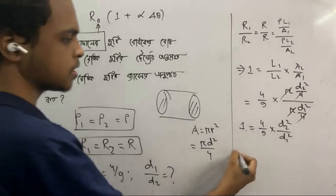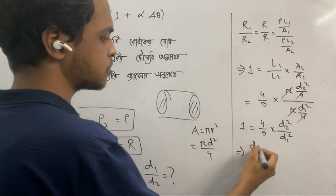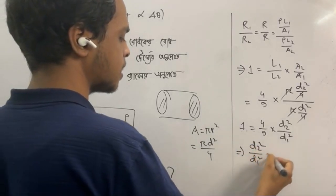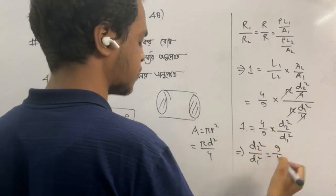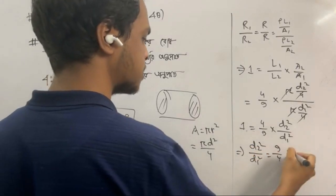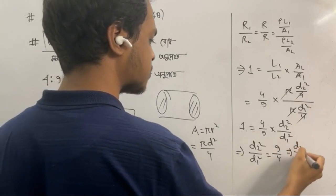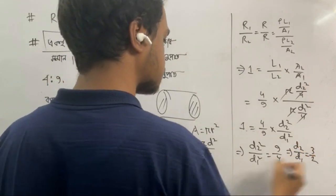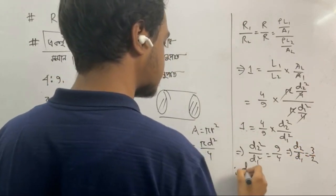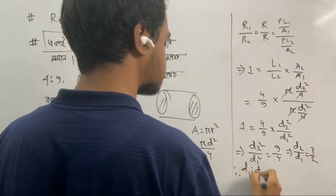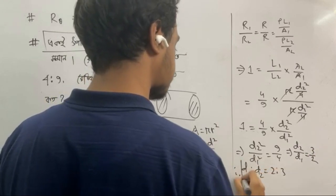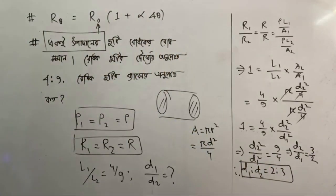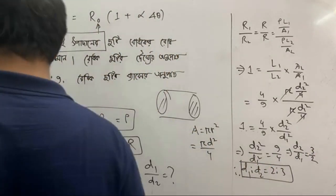So d2² by d1² equals 9 by 4. Taking square root: d2 by d1 equals 3 by 2. Therefore d1 is to d2 equals 2 by 3, which is 2:3.